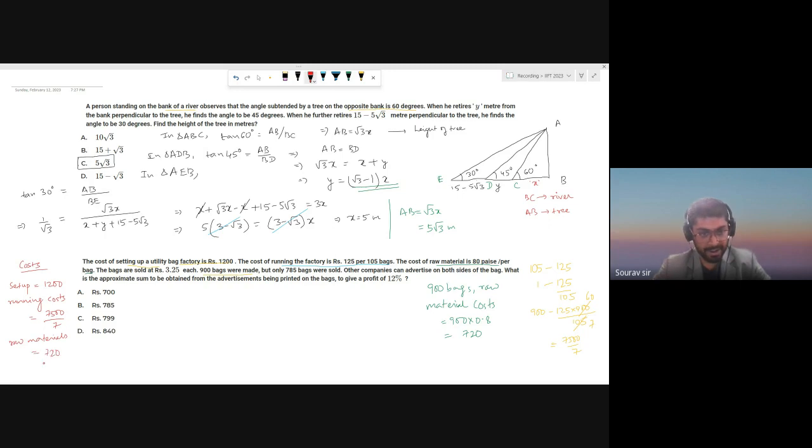So raw materials cost 720. Add all of them together, that will give you the cost price. That will turn out to be 1920 plus 7500 by 7. At the end of our entire transaction, we want a profit of 12%, so our required selling price should be 112% of our cost price. So 112 by 100 times 1920 plus 7500 by 7.